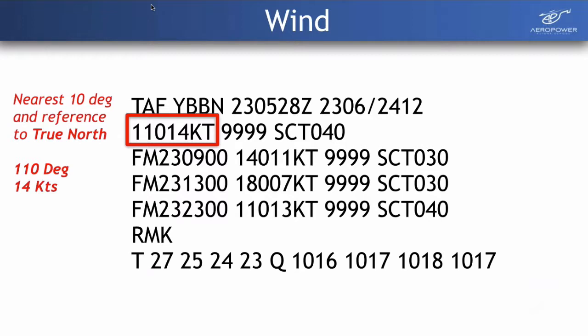Moving on to wind — wind is represented in basically five numbers. The first three numbers are the direction the wind is coming from, referenced to 360 degrees. In this case it's 110, so coming from the east-southeast. The last two numbers are the wind strength, so 14 knots. The important thing here is that wind direction is referenced to true north. When we convert it for flight plans, we'll need to convert it to magnetic, but when reading it in a weather forecast, it's true north.